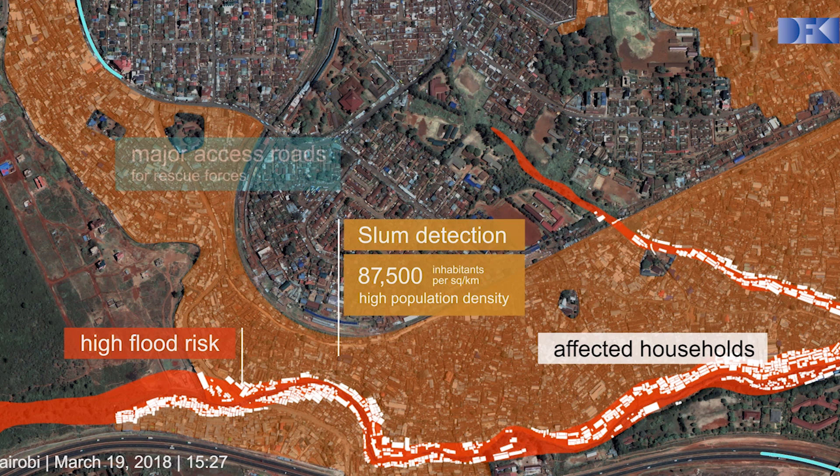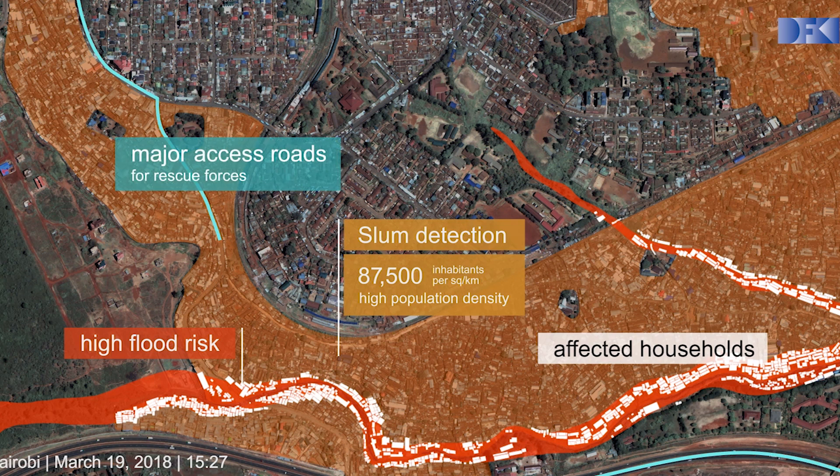If you combine it with topological maps in flooding, for example, you can forecast the routes for the security emergency — perhaps how they can come to the different places.